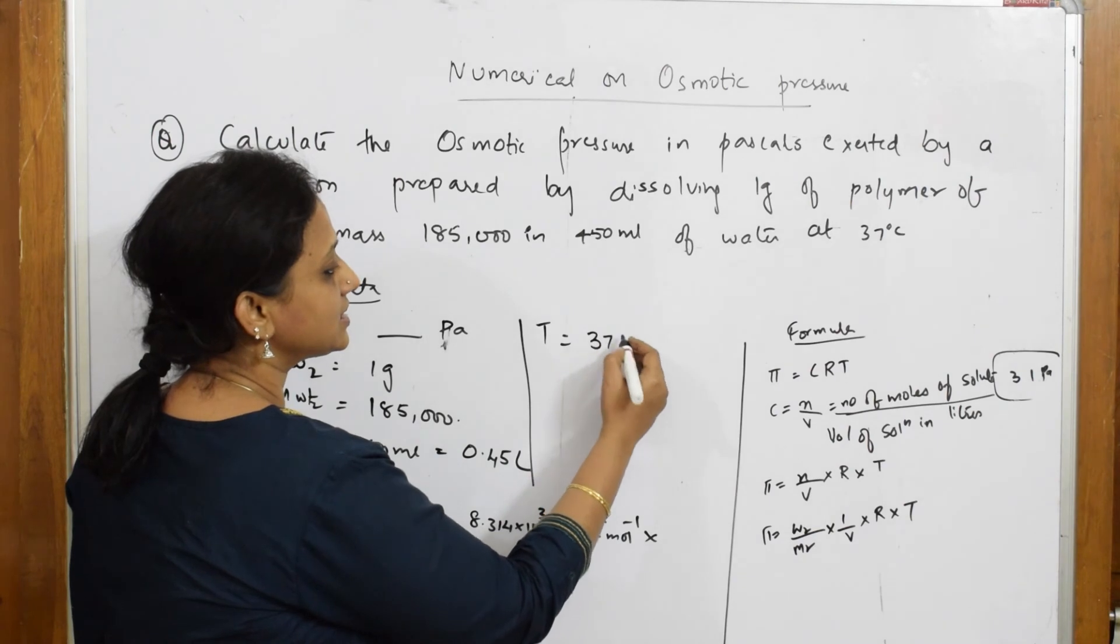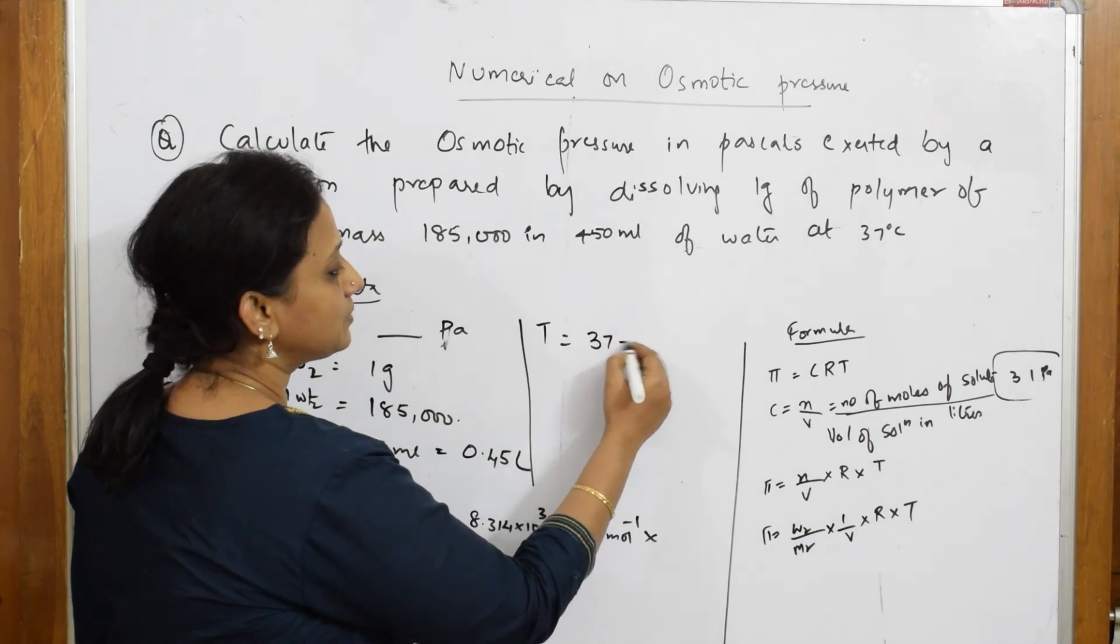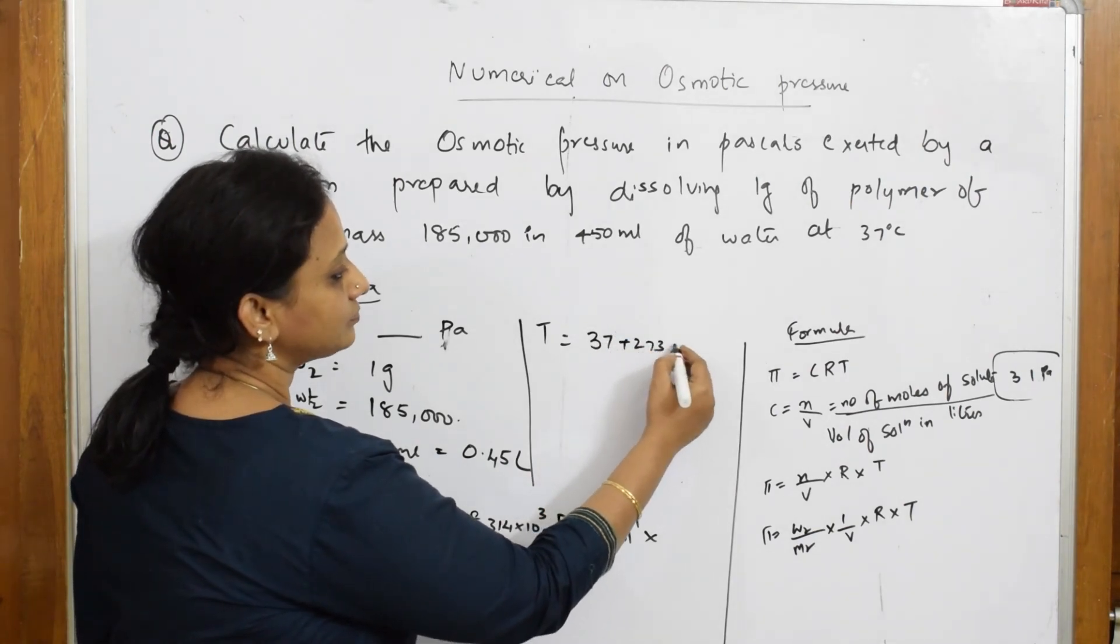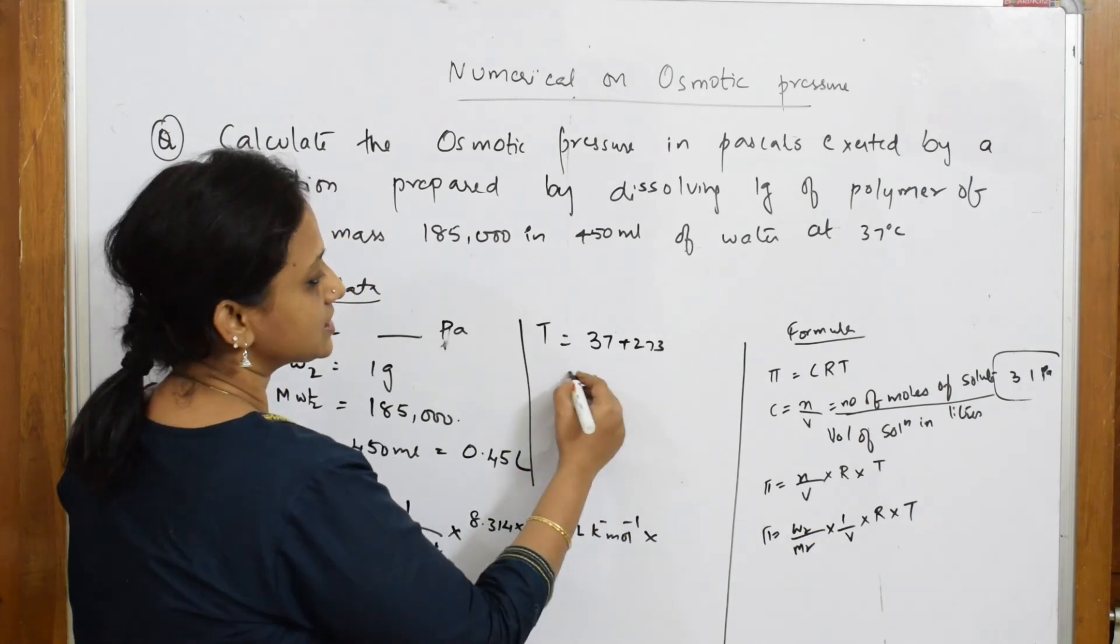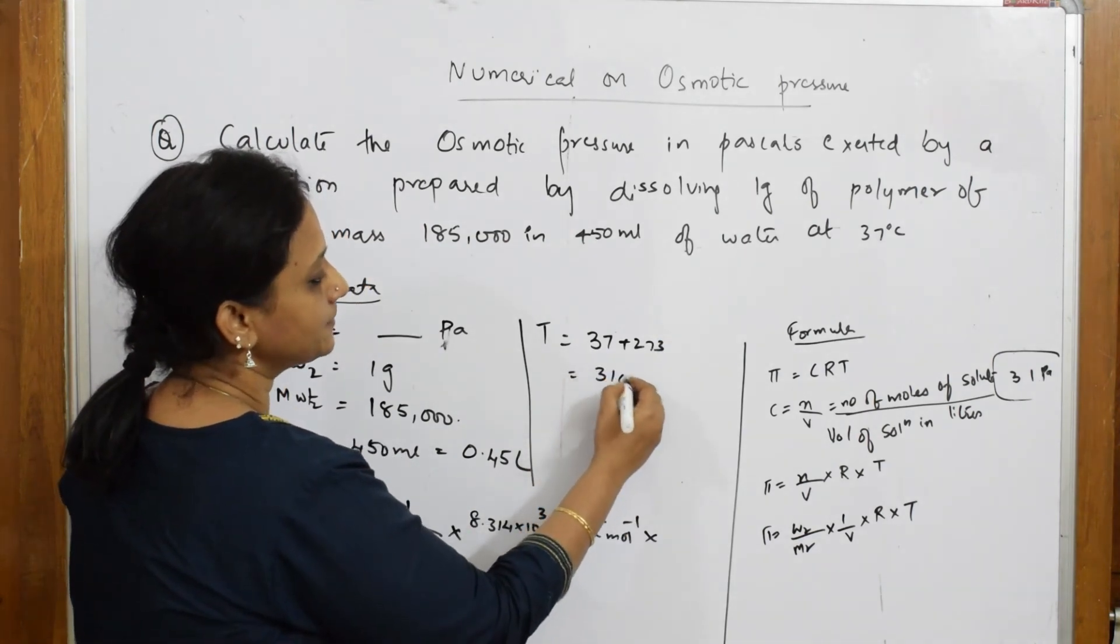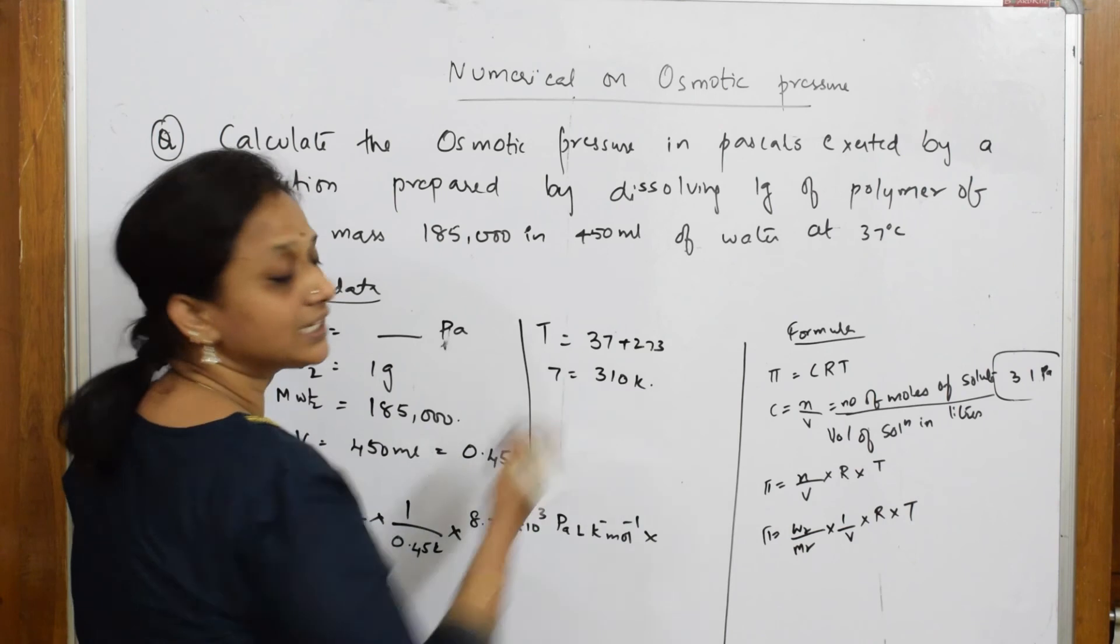37 degrees centigrade plus 273. This comes to 310. Temperature, 310 Kelvin.